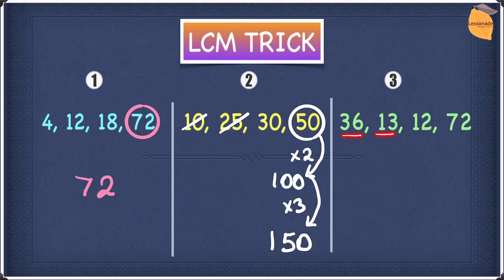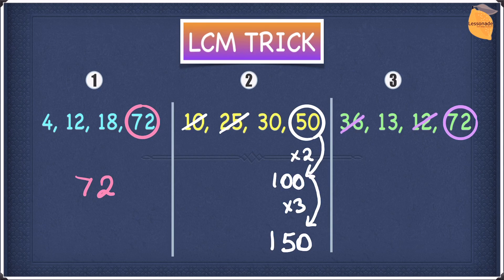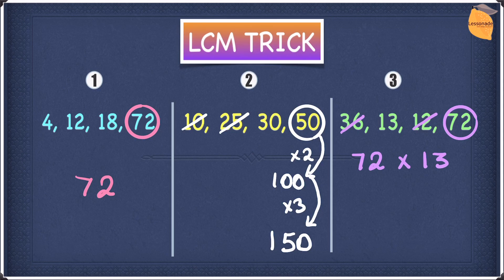The example we have is 36, 13, 12, and 72. Once again, choose the highest number — it is 72. Next, we're going to see whether 72 is divisible by 36, 13, and 12. We know that 72 is divisible by 36 and 12, so let's cross them off — but not by 13, because 13 does not go into 72. Since 13 is a prime number, you have to multiply the prime number by the highest number. So we do 72 times 13, which gives us 936. So our LCM for this question is 936. Well done — this is very simple and we still managed to do this question very quickly.